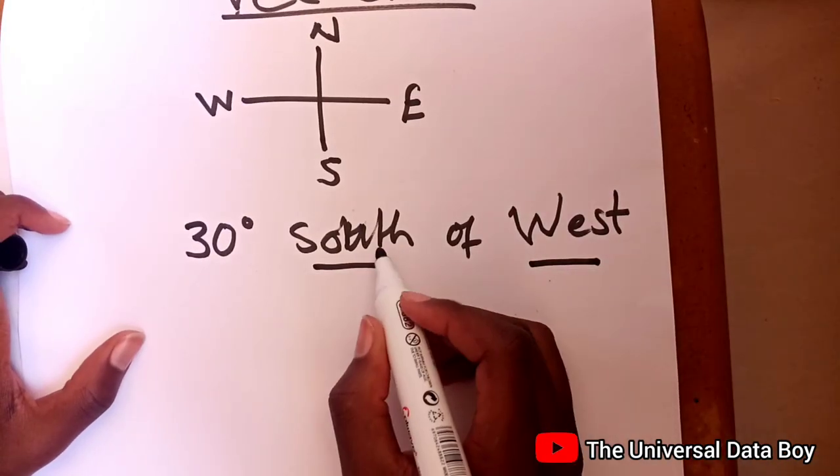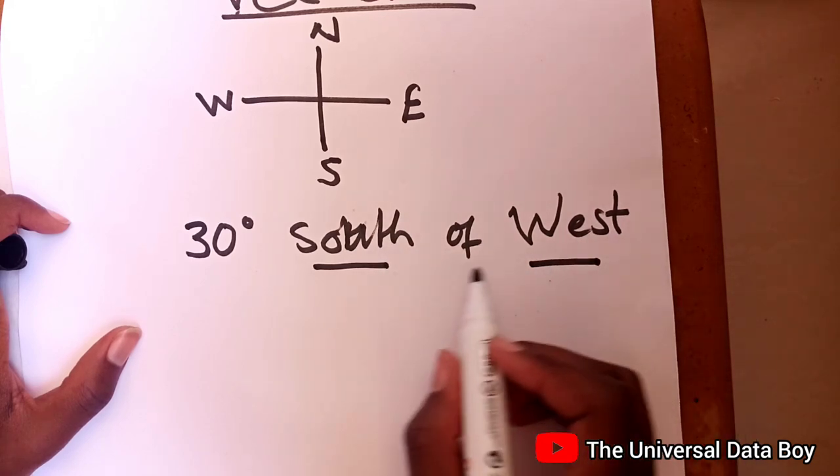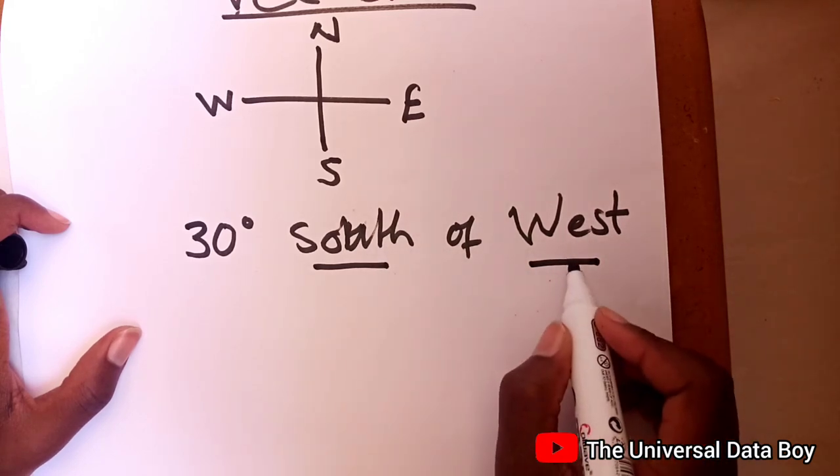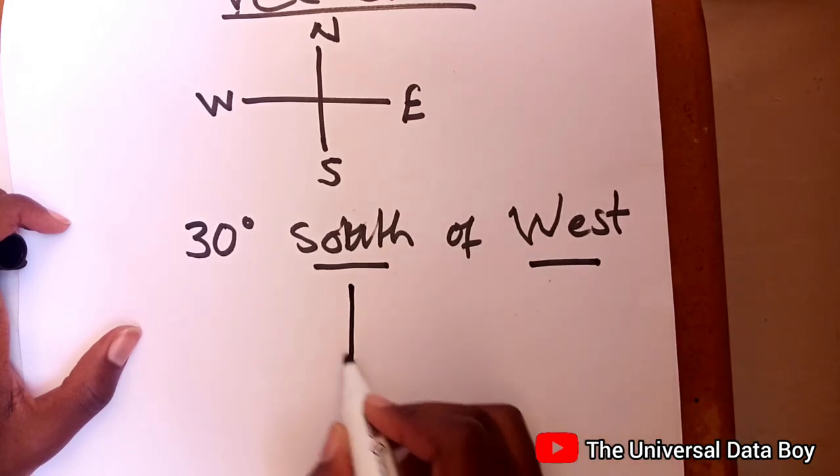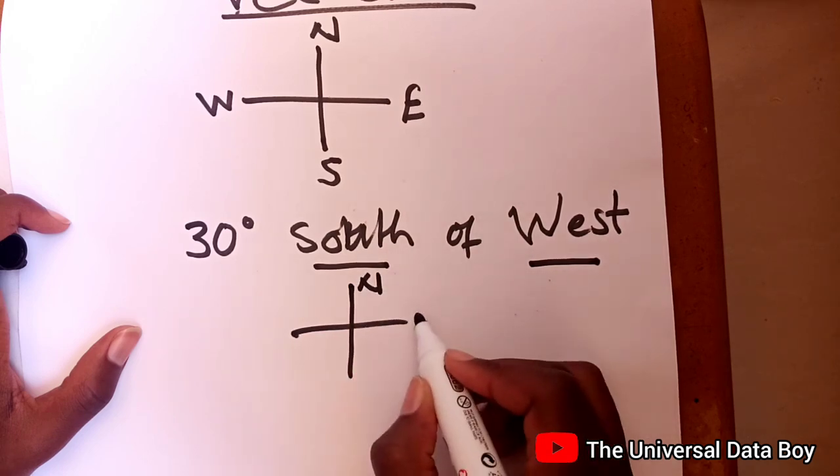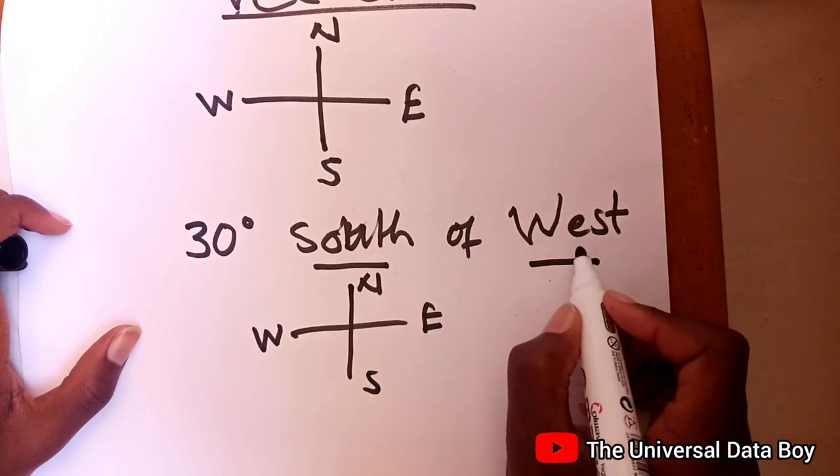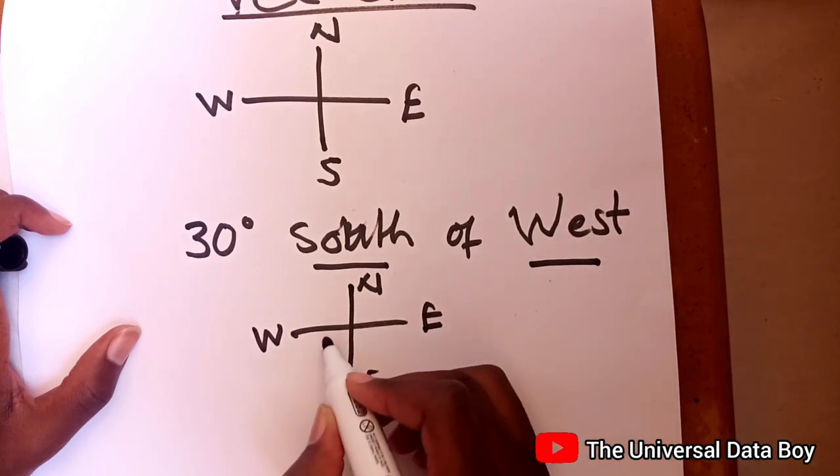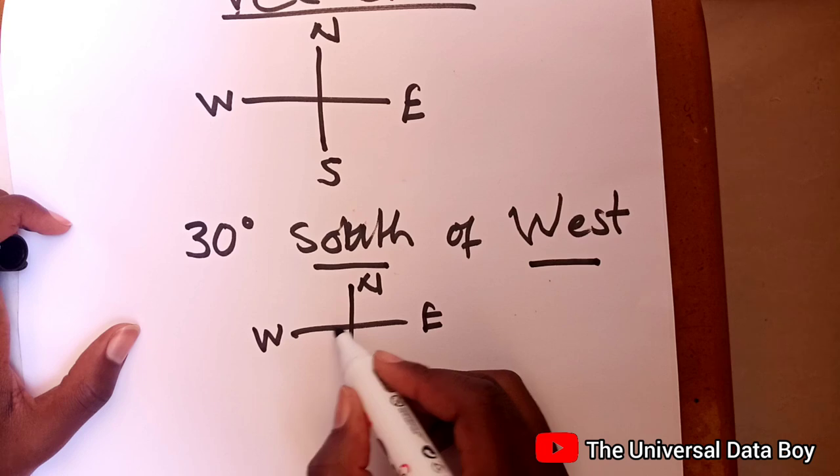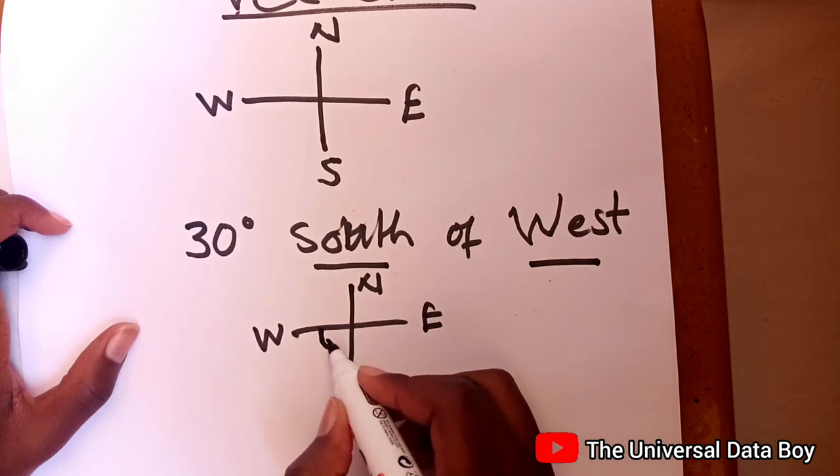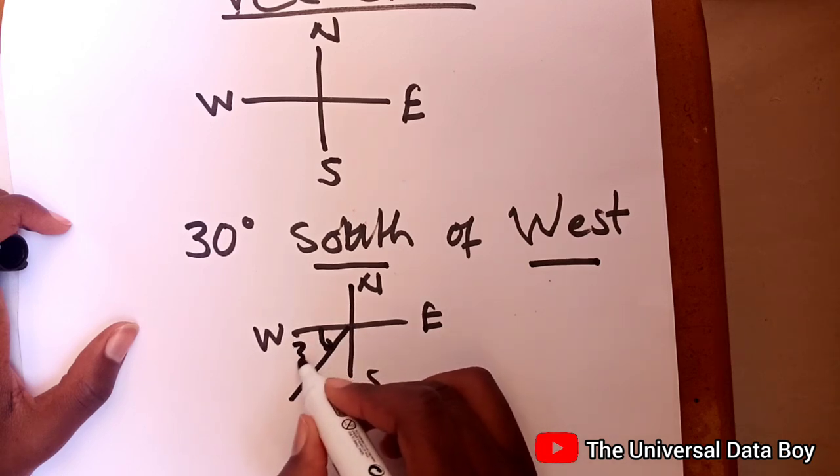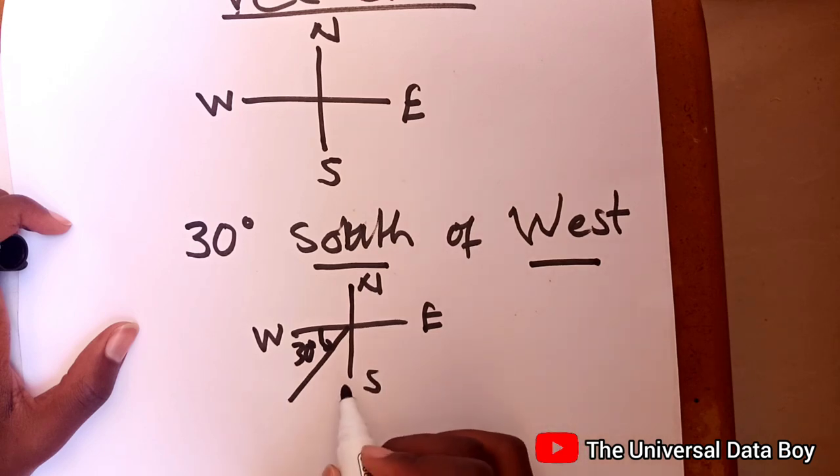So let's say you have south of west. So meaning that this is starting from the west. So we have our north, our east, our west, as well as our south. Then we know that our angle is starting from the west, this side, then it's going to the south. So it will only go by 30 degrees. So this is your 30 degrees south of west.